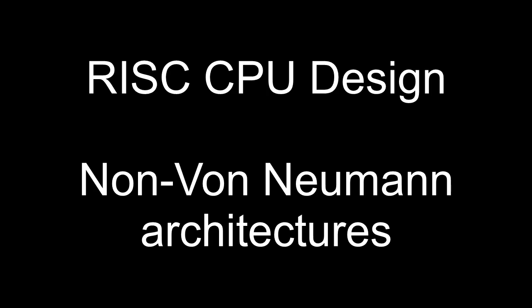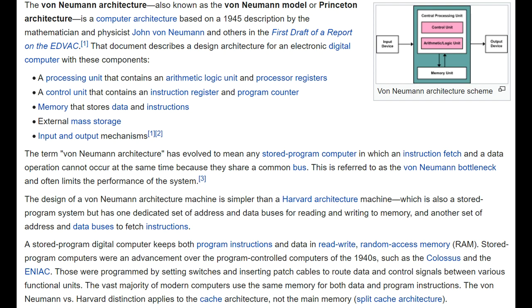Let's take a look at what it means to have a non-Von Neumann architecture. Wikipedia lists the characteristics of a Von Neumann architecture as a CPU that has an arithmetic logic unit and processor registers — well, we have that. A control unit that contains an instruction register and program counter — yes, we have that.